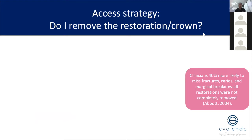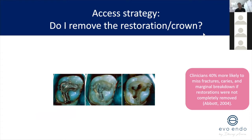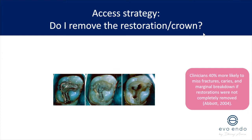A common question: do you remove the restoration or crown before you start? For me, if there are any question marks around the quality of the restoration — unless it was recently placed or placed by myself — I'm more inclined to take the restoration out. People commonly think an amalgam that looks ditched, fractured, with peripheral rim fractures is okay to access through. But if you don't remove it, you don't know what's underneath. If there's a vertical crack running through it, you'd have missed it and not understood why the tooth is still symptomatic.